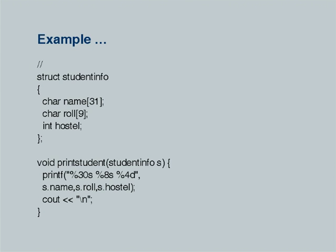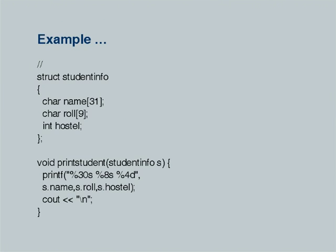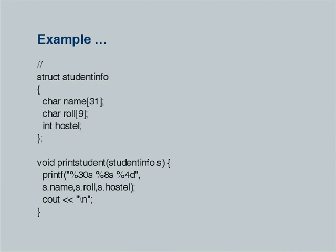I'd like you to once again look at the structure definition. Last time we saw in detail how a conglomerate of variables could be defined as a single structure. The `struct student_info` defines an additional type of data, and you can then define variables or even arrays containing this type. The difference is that a structure may have components which are not identical in type — for example, a character array for a 30-character string, another character array, and an integer variable for hostel, stored as a two or four byte integer.